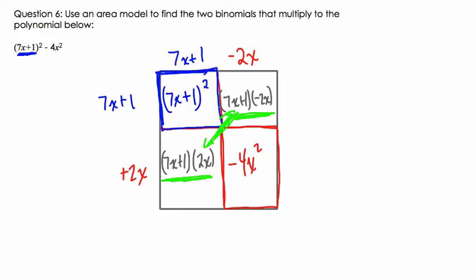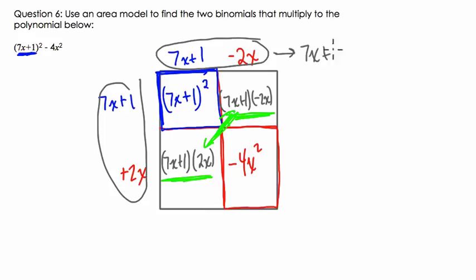So what does this mean? Well, this means that if we want to know what 7x plus 1 squared minus 4x squared is in terms of a factored form, it's just this binomial times this one. And look what starts to happen here. So 7x plus 1 minus 2x. Well, 7x minus 2x is 5x. And then we have 5x plus 1.